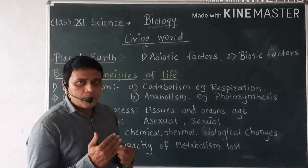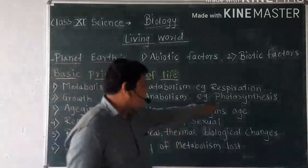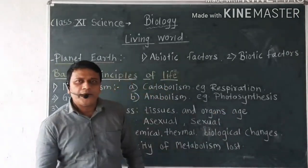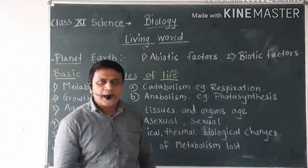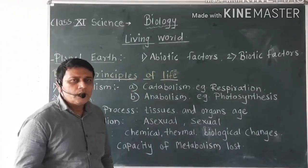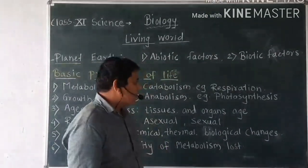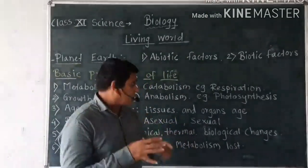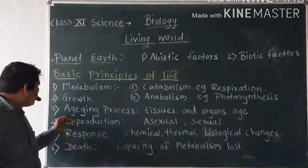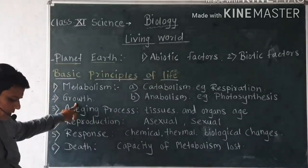In photosynthesis, we see that green plants produce their own food material with the help of sunlight, carbon dioxide, and water, and they produce food material or carbohydrates. This assimilatory process is called anabolism. The second basic principle of life is growth and development. Living organisms show growth and development up to a specific period, and there is a difference in growth between organisms.